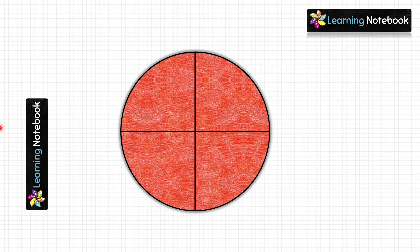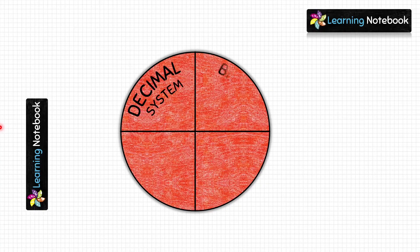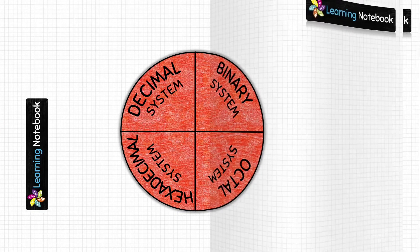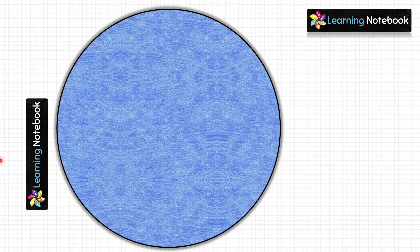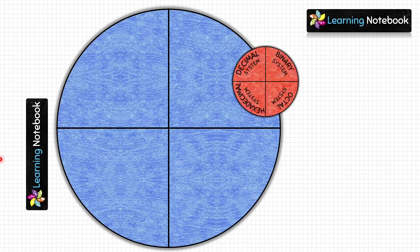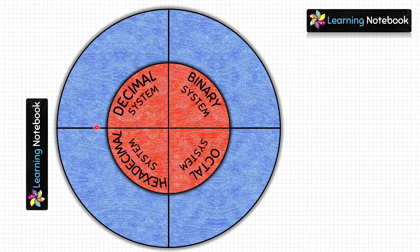Now write the four number systems used in computers: decimal number system, binary system, octal system, and hexadecimal system. In the next step, take the blue circle and fold it in the same way — vertically as well as horizontally — then place the red circle on it. Now let's start writing about each of these number systems.